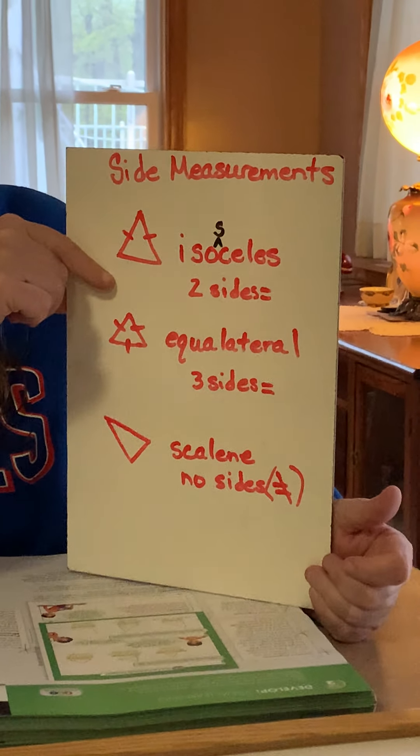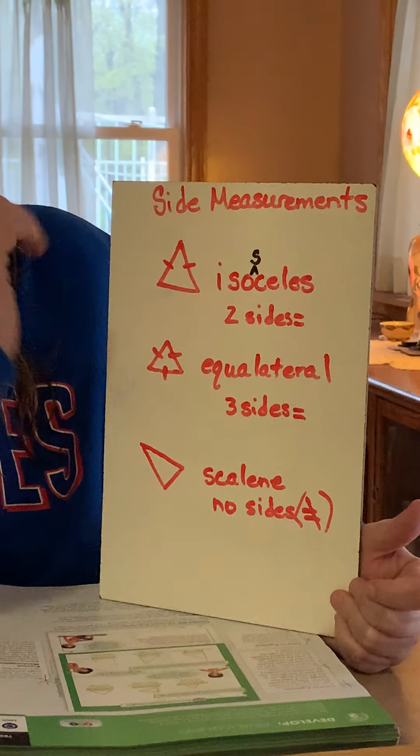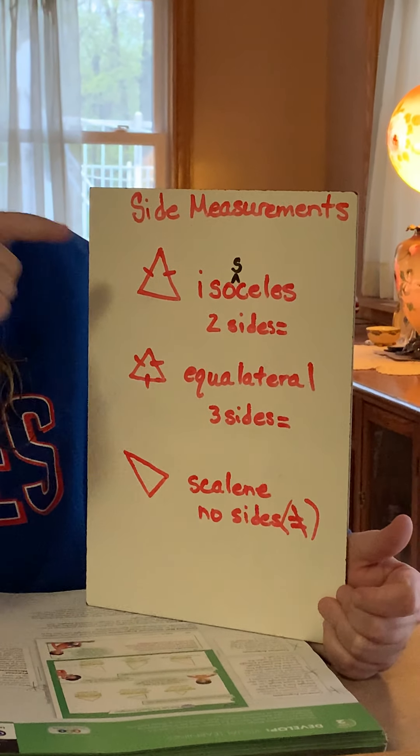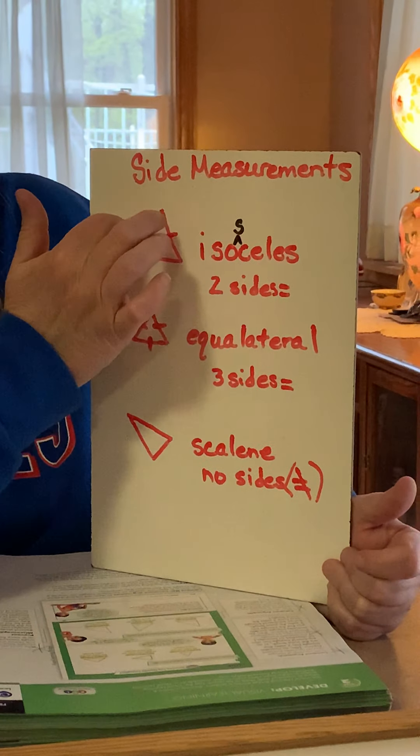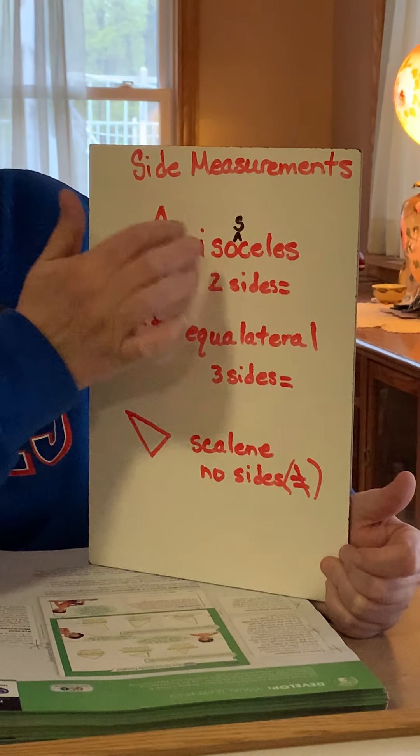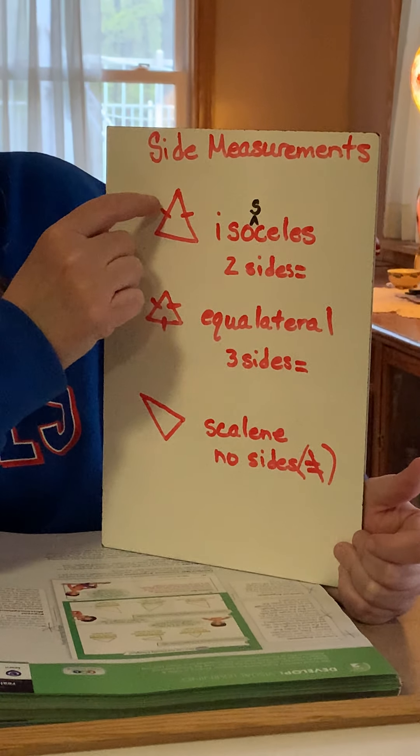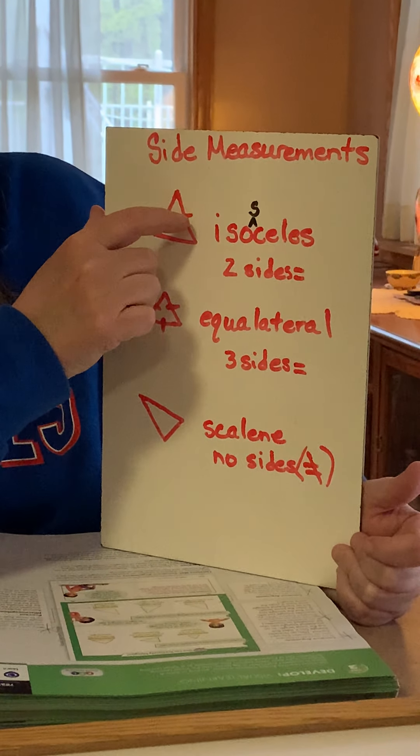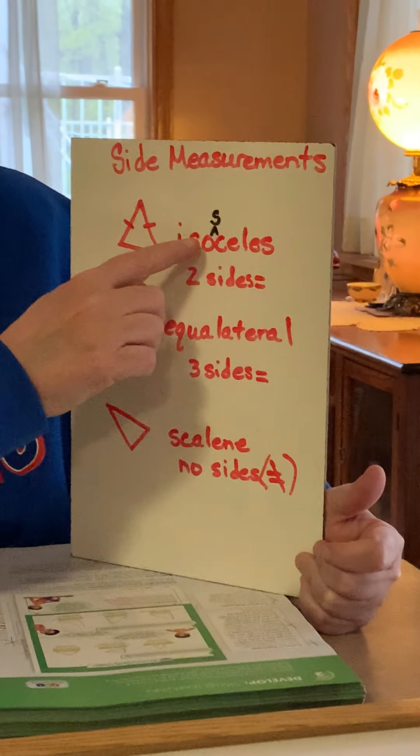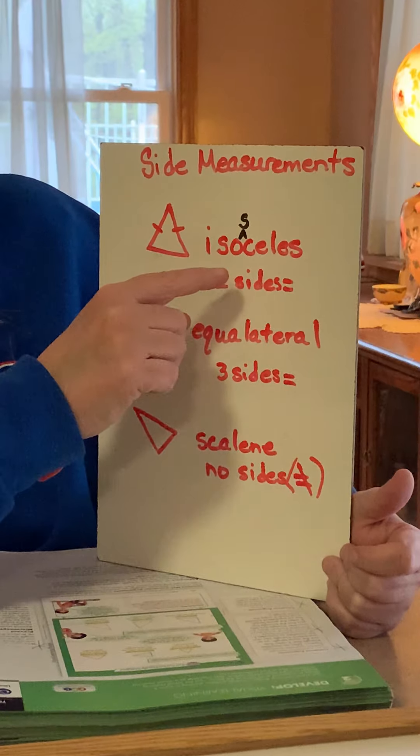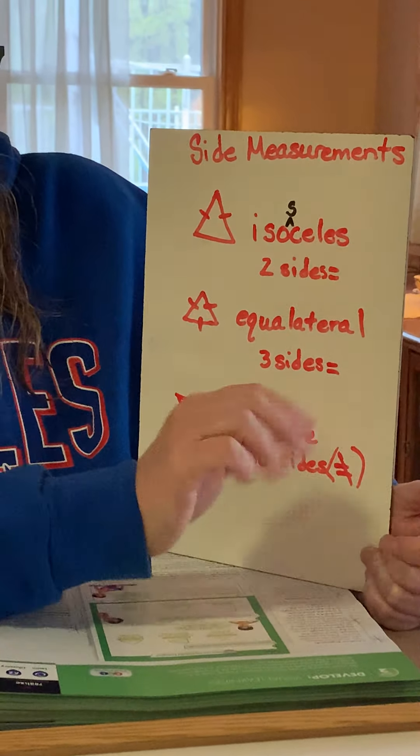An isosceles triangle has to have just two sides the same measurement. And it can be any two sides. Well, I'm going to take that back. It's generally the two standing up sides, but it could be the bottom and one of the sides. But an isosceles triangle, and I've got those two lines there, that shows you that this line and that line are supposed to be equal. So the isosceles triangle has to have two sides that equal the same to make an isosceles.